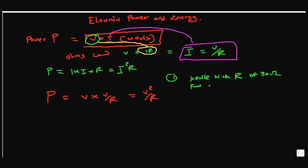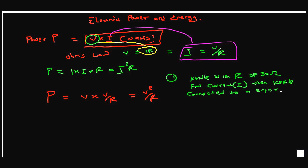Find the current (I) when the kettle is connected to a 240-volt supply. And find the power rating of the kettle.